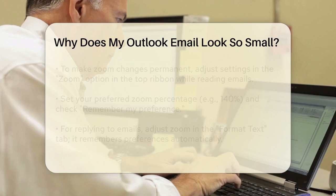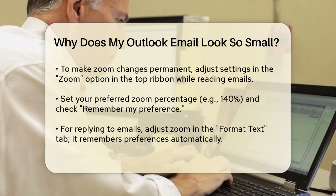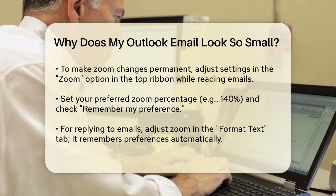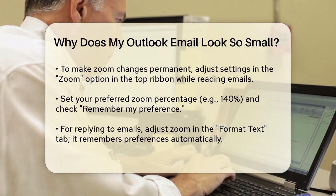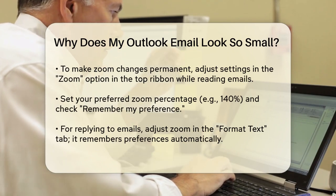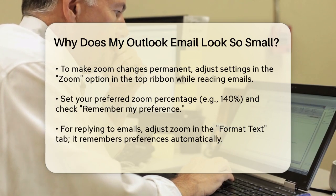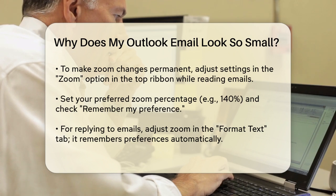To make the change permanent, you need to adjust the settings in two places. For reading emails, go to the Zoom option in the top ribbon, change the percentage to your preferred size, such as 100%, and make sure to check the box that says Remember My Preference. This way, the next time you open an email, it will be at the size you set.